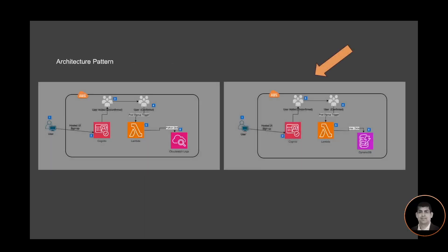Let's look at the architecture pattern. I have two architecture designs here. In the first design, a user uses a hosted UI for signup. Once the user is added, I confirm the user, and that confirmation triggers a post signup trigger which invokes a Lambda function. The Lambda function has code to store the user info in a Python dictionary and in a CloudWatch log. The second use case is very similar, with the exception that the same user info is stored in a DynamoDB table instead of a CloudWatch log.